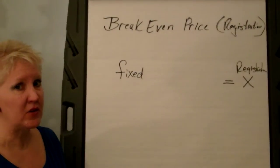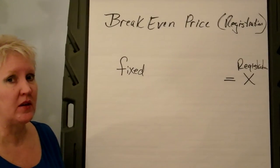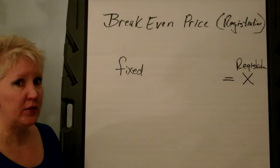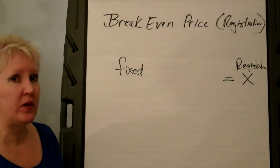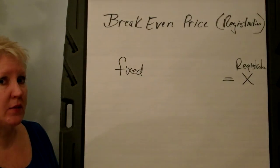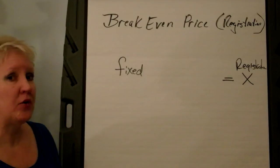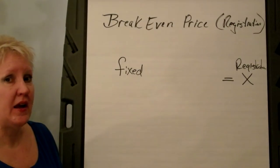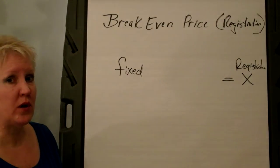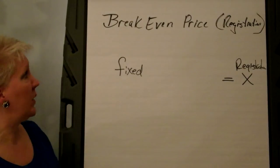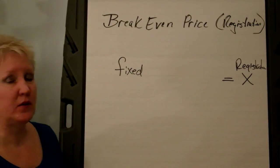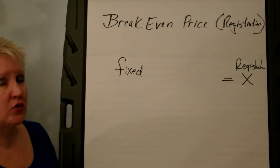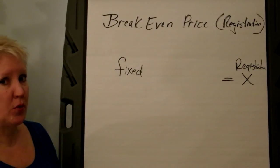This is actually the third video in a series on the infamous break-even formulas. In the first video we gave an overview; in the second video we talked about some of the basics, including how to get to your total fixed cost and total variable cost. And in this one we are jumping into the first formula: the break-even price, which determines what registration or ticket price you need to charge to break even.